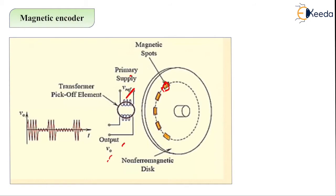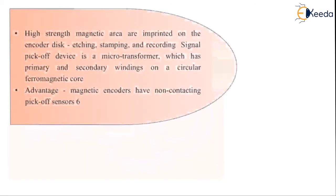The advantages of magnetic encoders include having non-contacting type pickup sensors. This is related to the magnetic encoders.